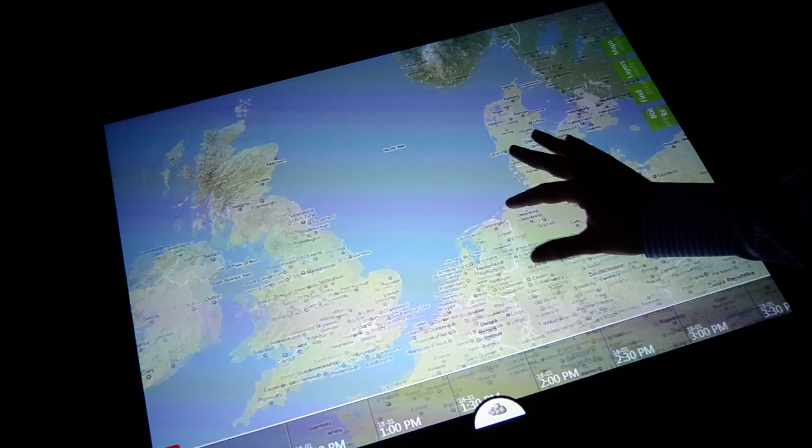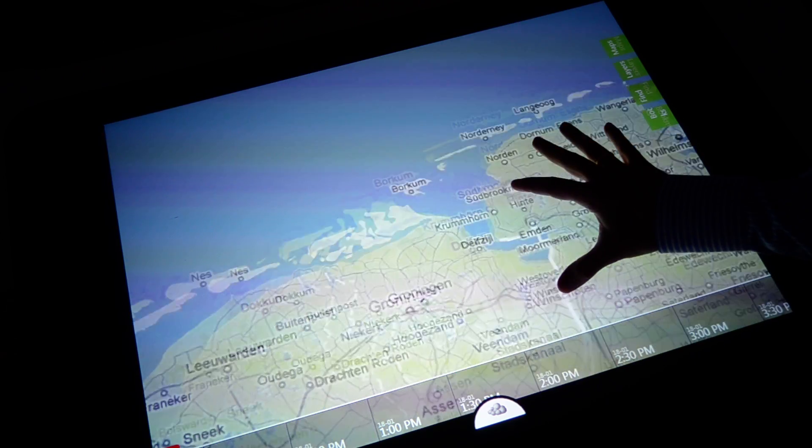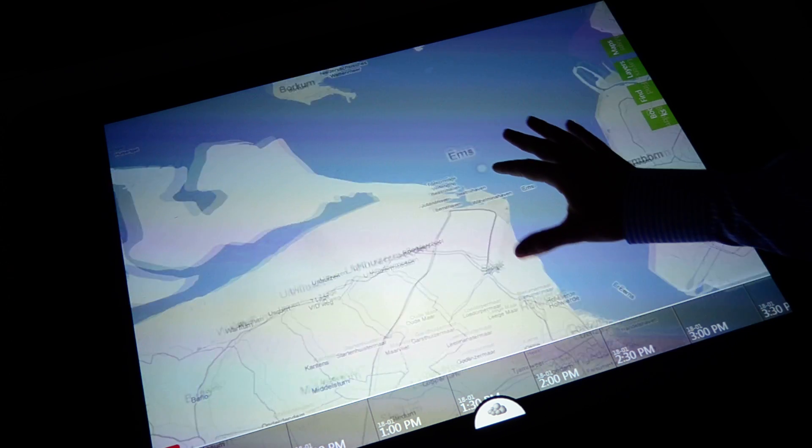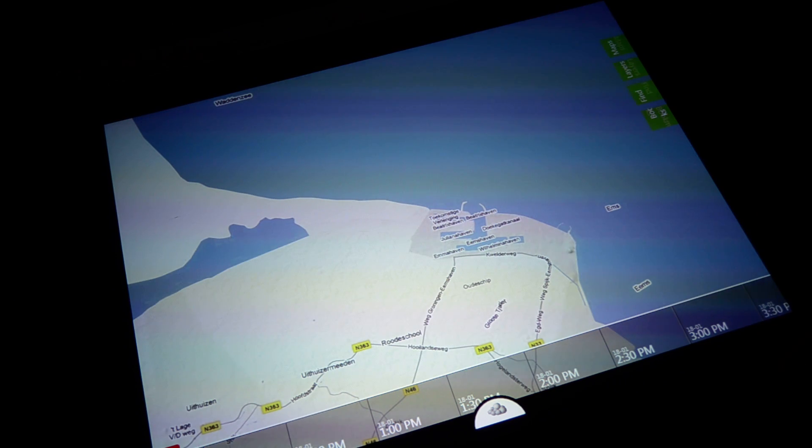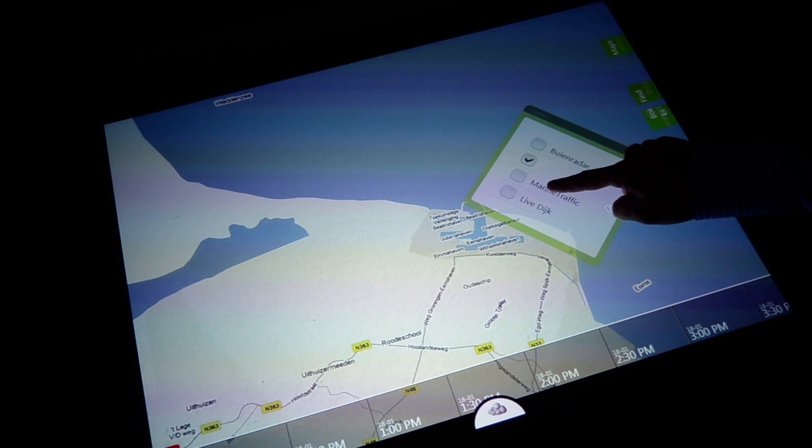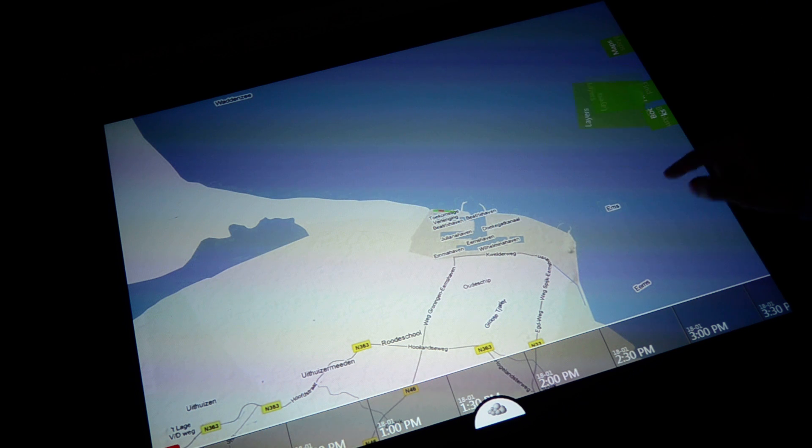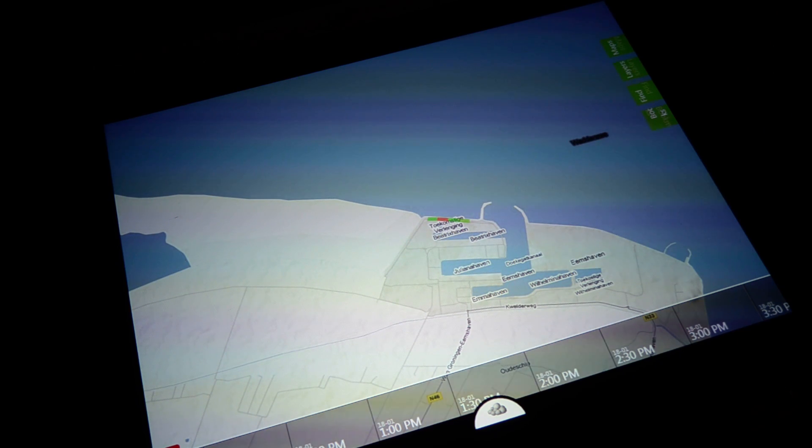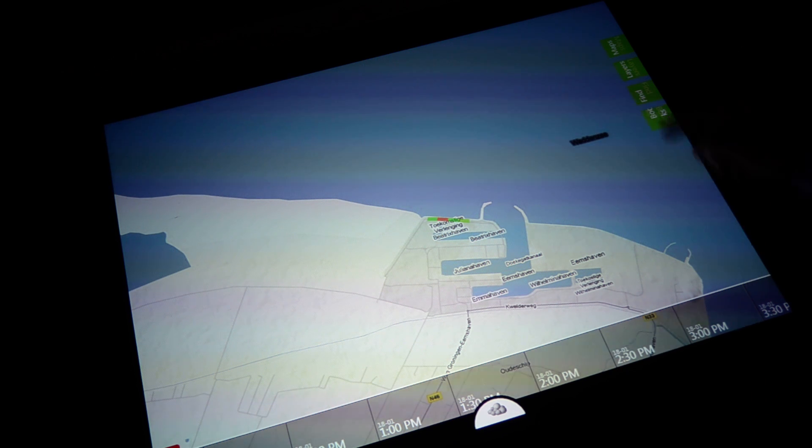So if we zoom in to the location of where the dike is, which is here, I can add the layer for the dike. And now you see popping up here the green and red parts of the dike.